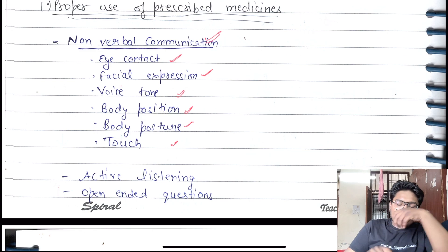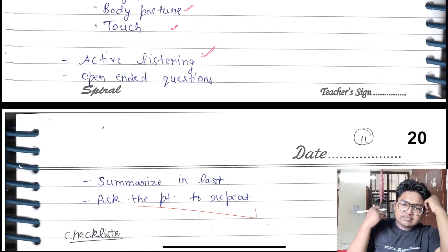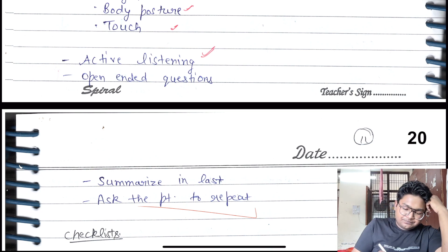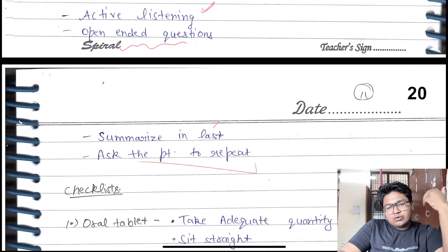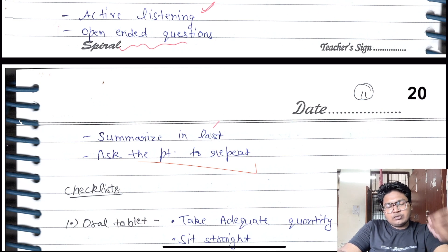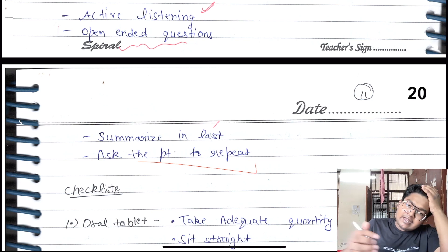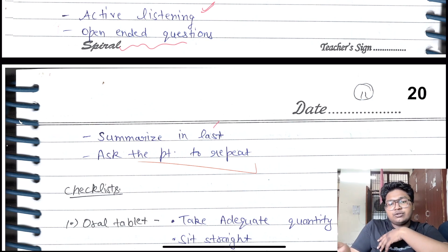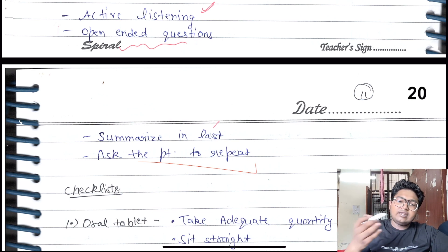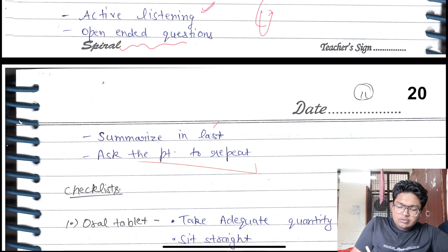Active listening is very important. If the patient is saying something, you have to not only listen but think on it also. Use open-ended questions and summarize at the end. Ask the patient to repeat - this is very important in communication.